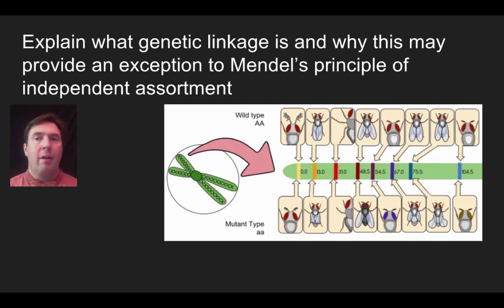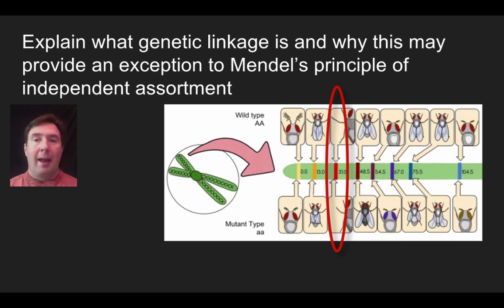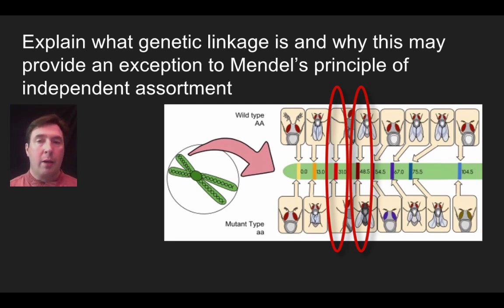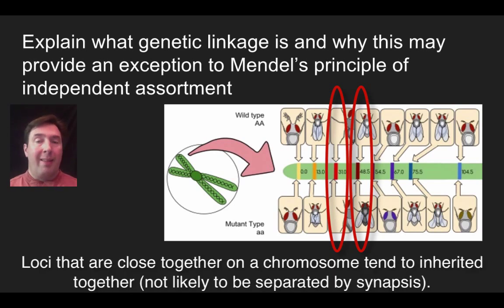Now let's take traits that are not quite like that. Consider long legs versus short legs and light body versus dark body. These two loci are only 17.5 map units apart. Because the distance is so small, the likelihood that crossing over will occur between them goes way, way down. What we find is that when you have two loci on a chromosome that are really close together, those genes do not assort independently — you are more likely to pass them on as a package.